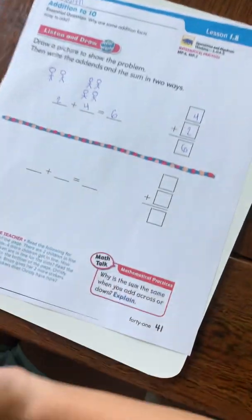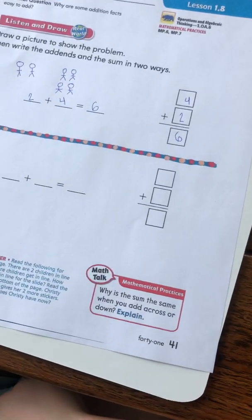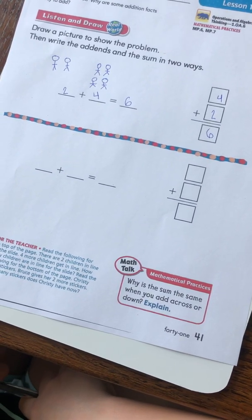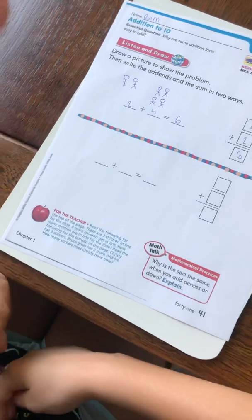Okay, the second problem says, Christy has three stickers. Bruce gives her two more stickers. How many stickers does Christy have now?